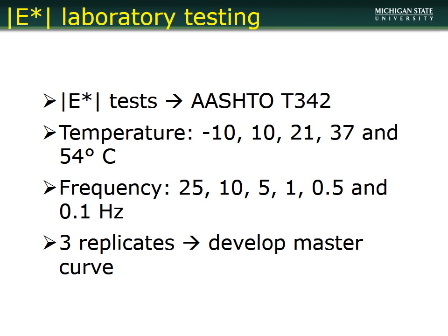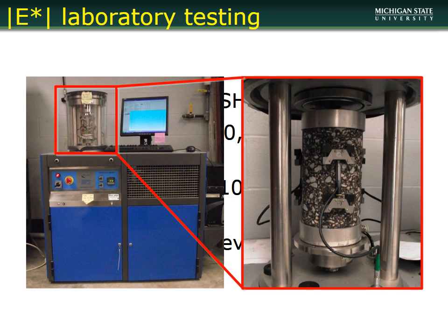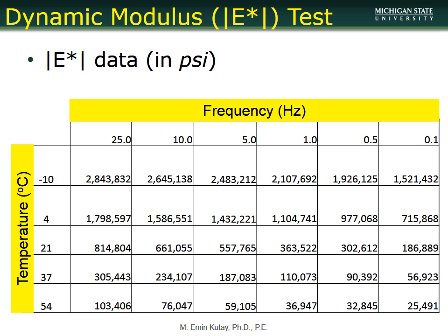For laboratory testing — as of August 2015 when this was recorded — we use AASHTO T342 with recommended temperatures of minus 10, 4, 21, 37, and 54 degrees Celsius and recommended frequencies of testing. We typically run three replicates to minimize sample-to-sample variability. The sample is cylindrical and we mount three LVDTs around it to get an average of the strains.